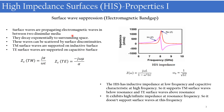Let's discuss some of the important characteristics exhibited by high impedance surfaces. The first property is surface wave suppression, also called the electromagnetic band gap characteristic.